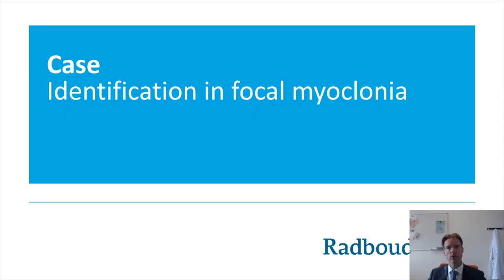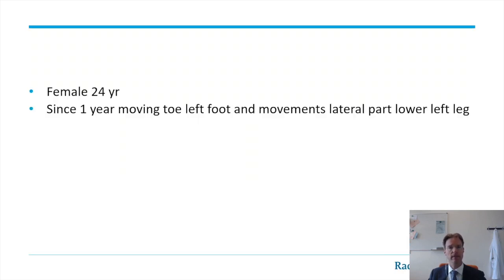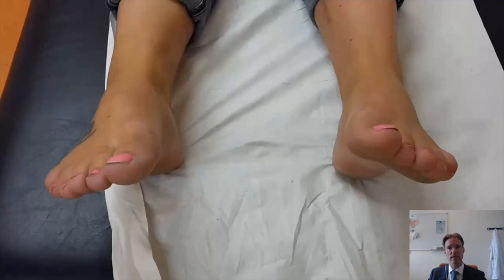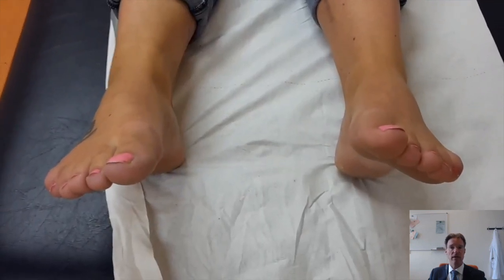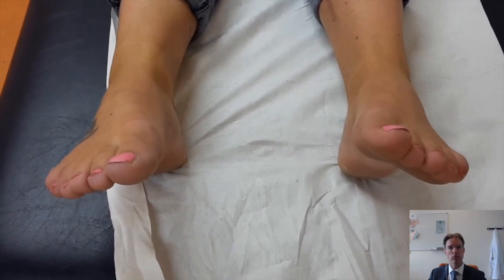The next case is also one where ultrasound can really be helpful in identifying active muscles — in this case, focal myoclonia as well. It's a female, 24 years of age, with one-year complaints of a moving toe of the left foot and movement in the lateral part of the lower left leg. Here you can see a movie of the movements of the toes of the left foot, and especially the second and third toe are moving.